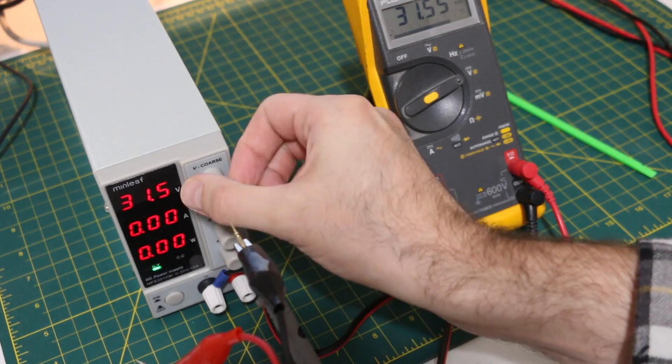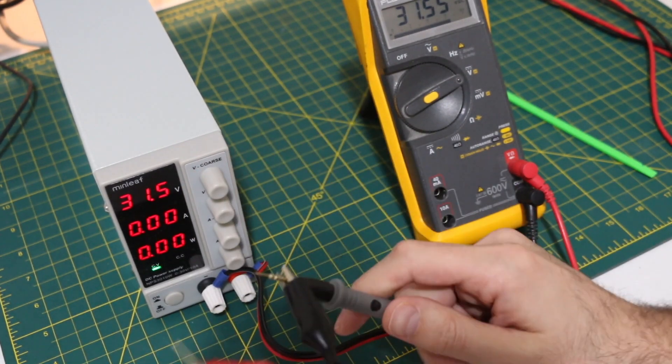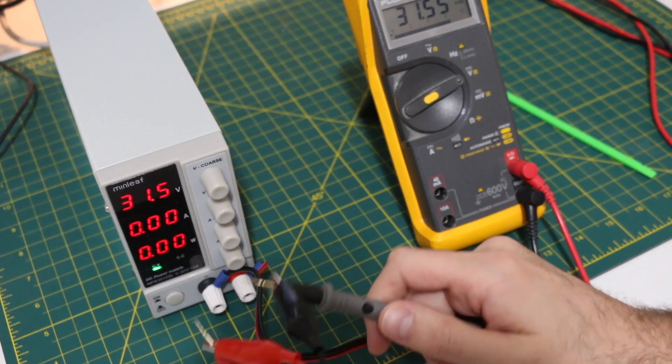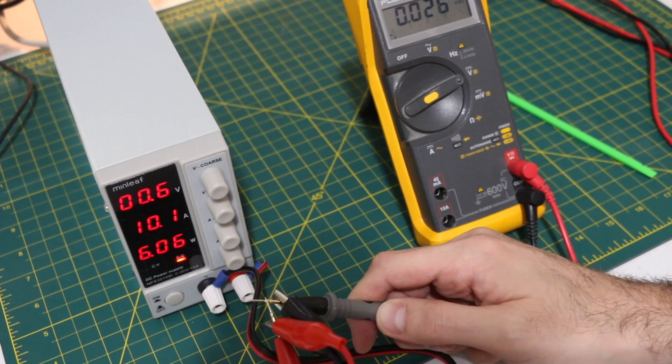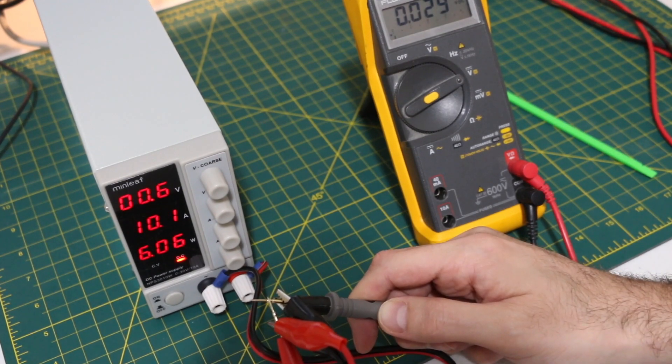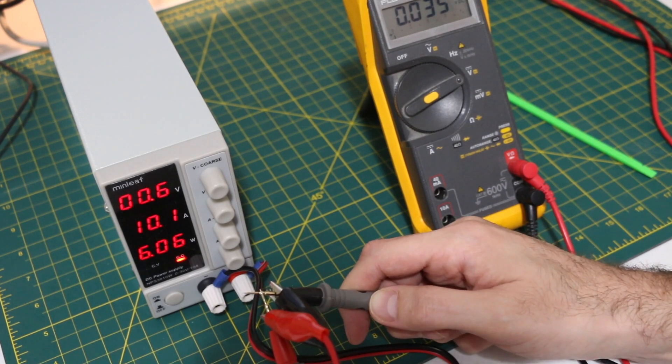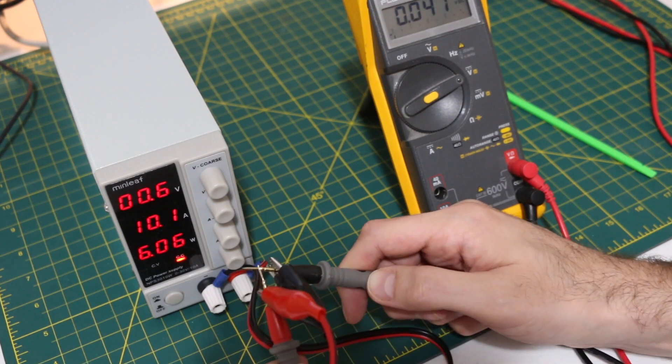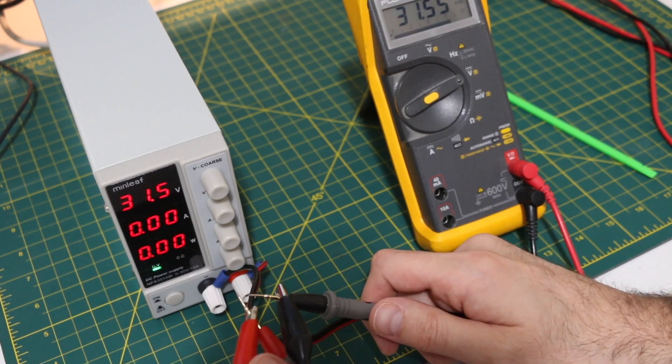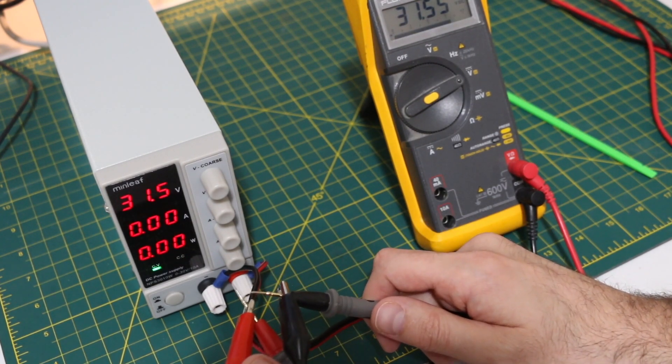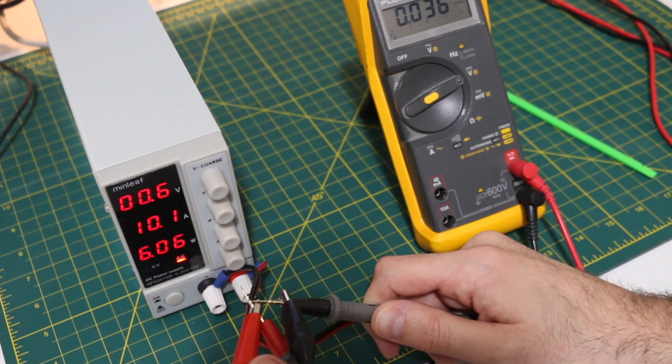So now I've got the coarse and fine up on maximum for voltage and current. When I short this I should be able to get my full 10 amps. 10.1 amps, six watts, and it dropped to 0.6 volts of course because I'm short circuiting it and it's in constant current mode. But I was hoping for a spark. Let me try again. Oh, fireworks!